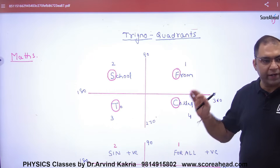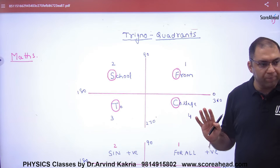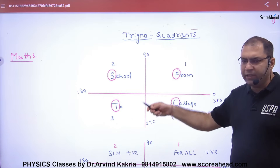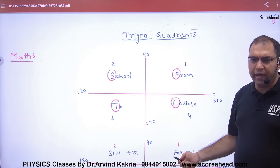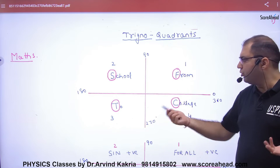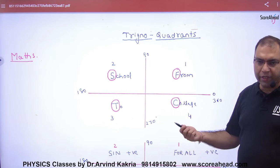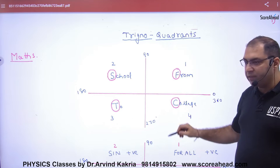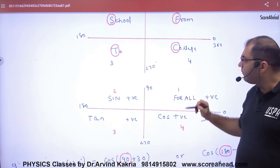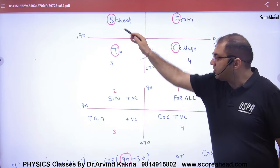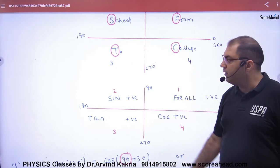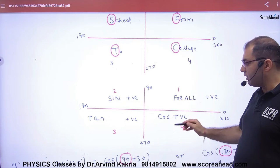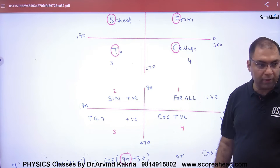Write down the standard angles. To remember the signs in each quadrant, use this mnemonic: F means 'For All' (all positive), S means Sine, T means Tan, and C means Cos — indicating which function is positive in each quadrant.